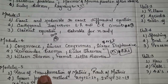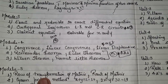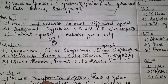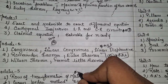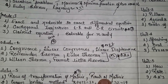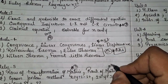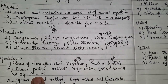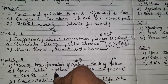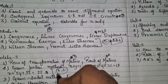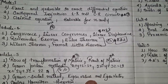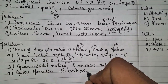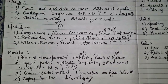Module 5 is the most important unit and guarantees marks. Question one: rank of a matrix using row transformation — asked continuously for the last two to three years. Question two: Gauss-Jordan method, for example solving x + y + z = 10, 2x − y + 3z = 19, x + 2y + 3z = 22 — two 6-mark questions will definitely be asked. Question three: eigenvalues and eigenvectors, and the Cayley-Hamilton theorem — very important, 100% chances.